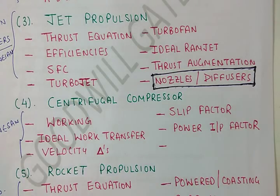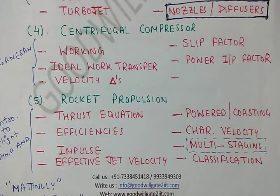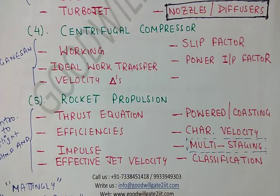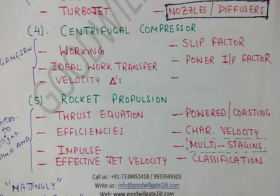Finally, we'll cover rocket propulsion — how thrust is produced inside a rocket engine, efficiencies, effective jet velocity, characteristic velocity, staging in rockets, rocket classification, powered flight, coasting flight, and related calculations. These are the star topics that will cover a hundred percent of Gate questions in this area.